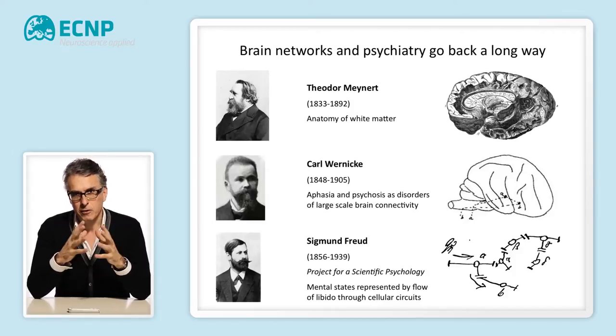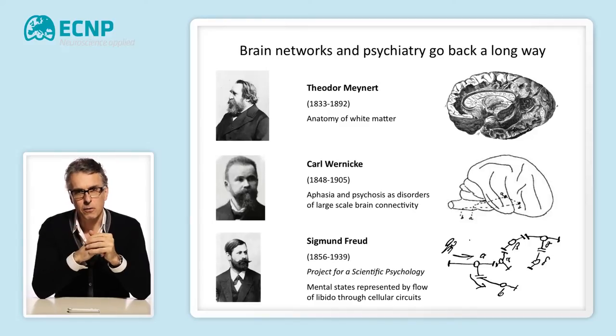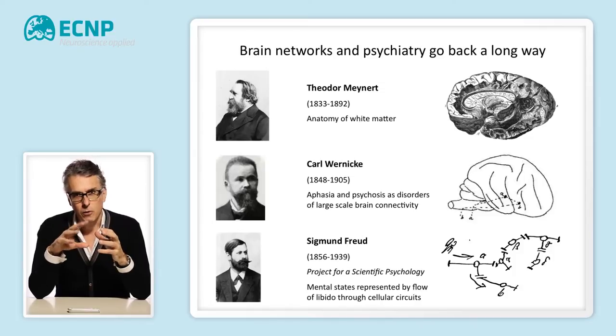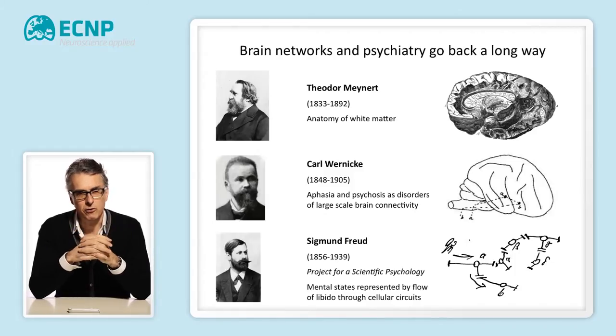Even Sigmund Freud in the 19th century — who we sometimes forget was originally a neuroscientist — when he began to think about how the brain processed psychic material, represented his model initially in the form of a network. The sketch on the slide shows a famous figure from his 'Project for Scientific Psychology,' where you can see a network of cells with some mysterious energy flowing through them. So these ideas about brain networks — anatomical brain networks at a macro scale, as demonstrated by the anatomists, and at a micro scale as sketched by Freud — go back a very long way in our thinking about brain disorders and psychiatry.